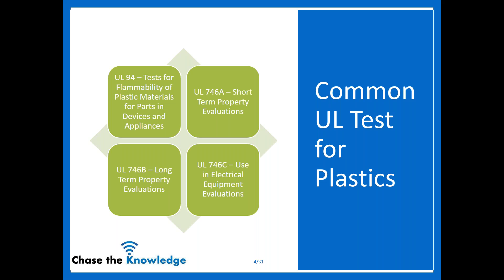The common tests we're going to talk about: UL 94, which covers the flammability of plastic materials for parts, devices, and applications. We're also talking about UL 746A, which is your short-term property evaluation. UL 746B, which is your long-term evaluation tests. And then 746C, which is for use in electrical equipment evaluations.